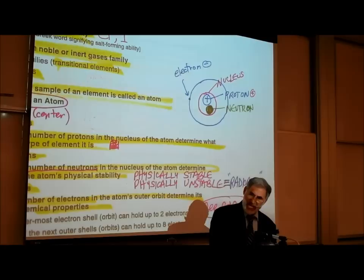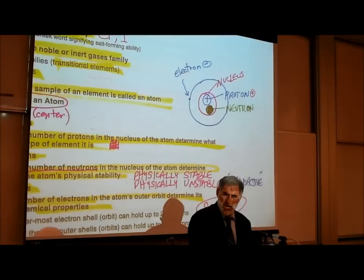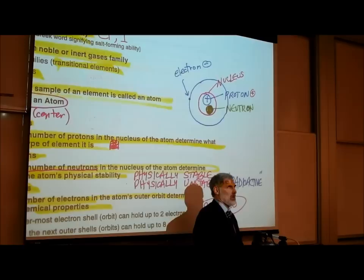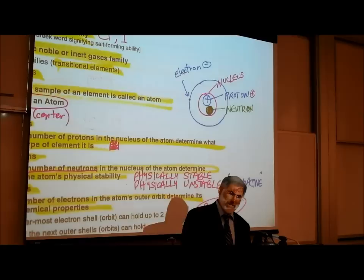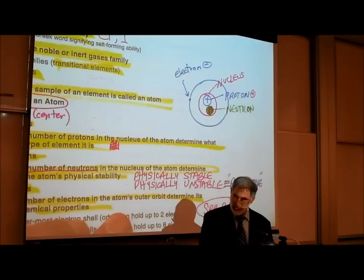Electrons are much, much smaller than protons or neutrons. Electrons have a negative electrical polarity, so they kind of circle around the nucleus. Because electrons are much smaller than protons and neutrons, how much an atom weighs is determined by the number of protons and neutrons it has. The weight is not affected by the number of electrons.